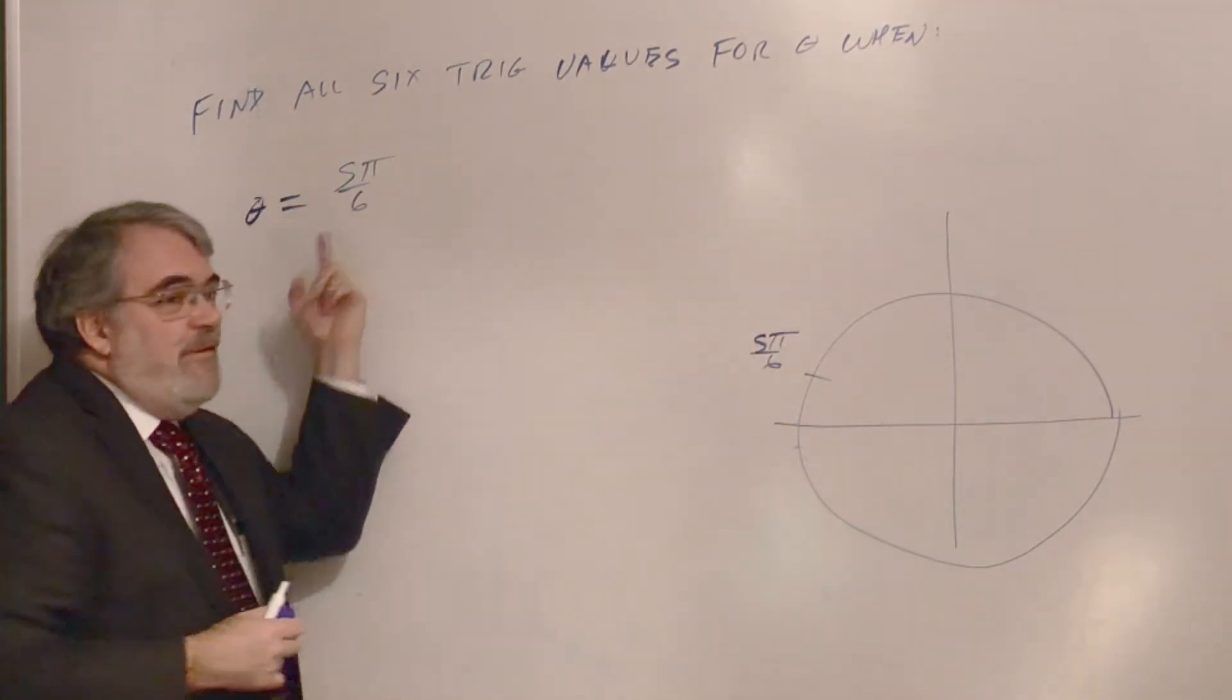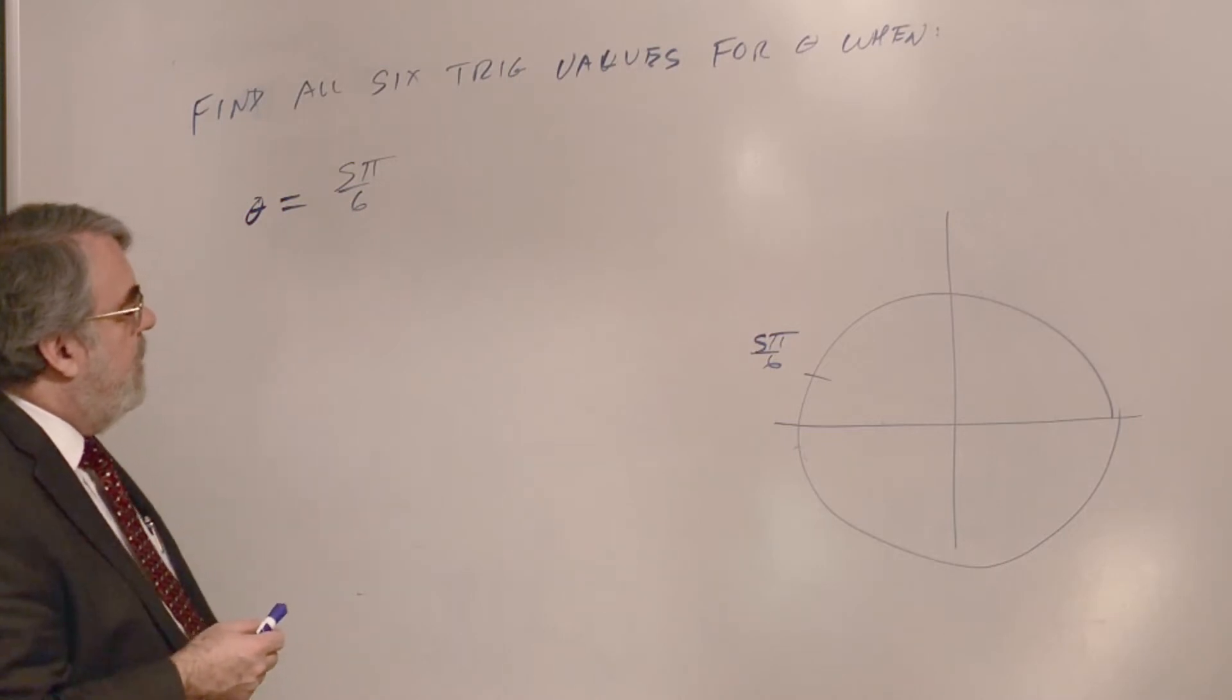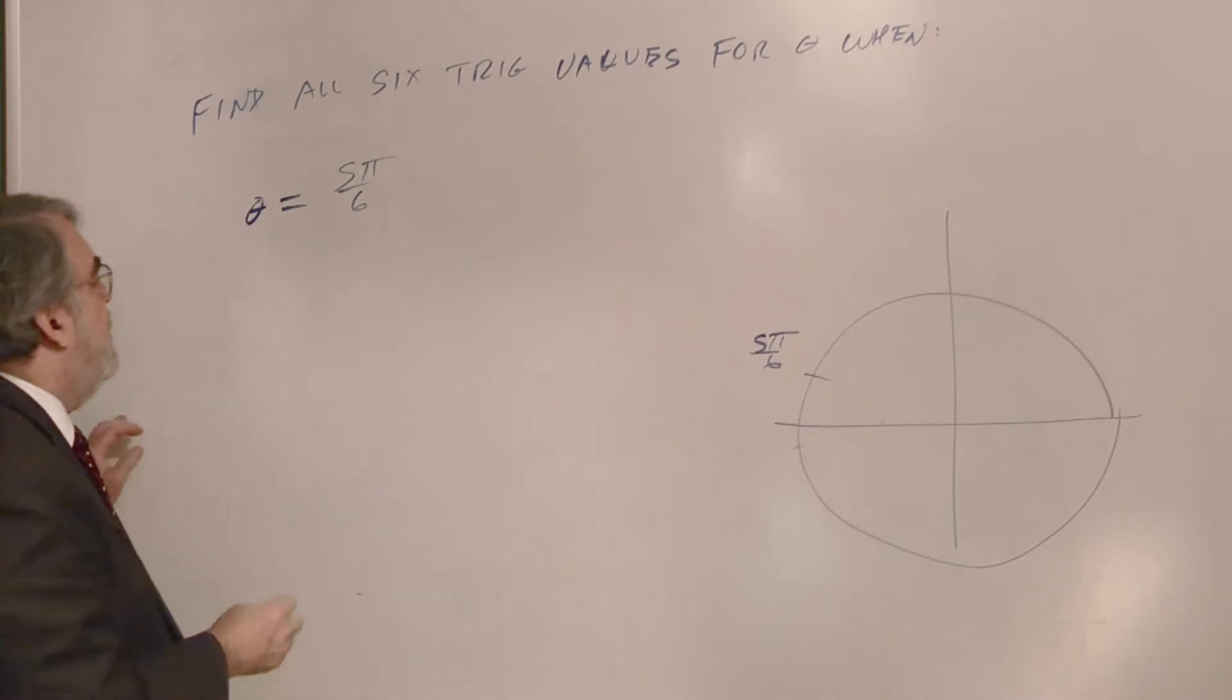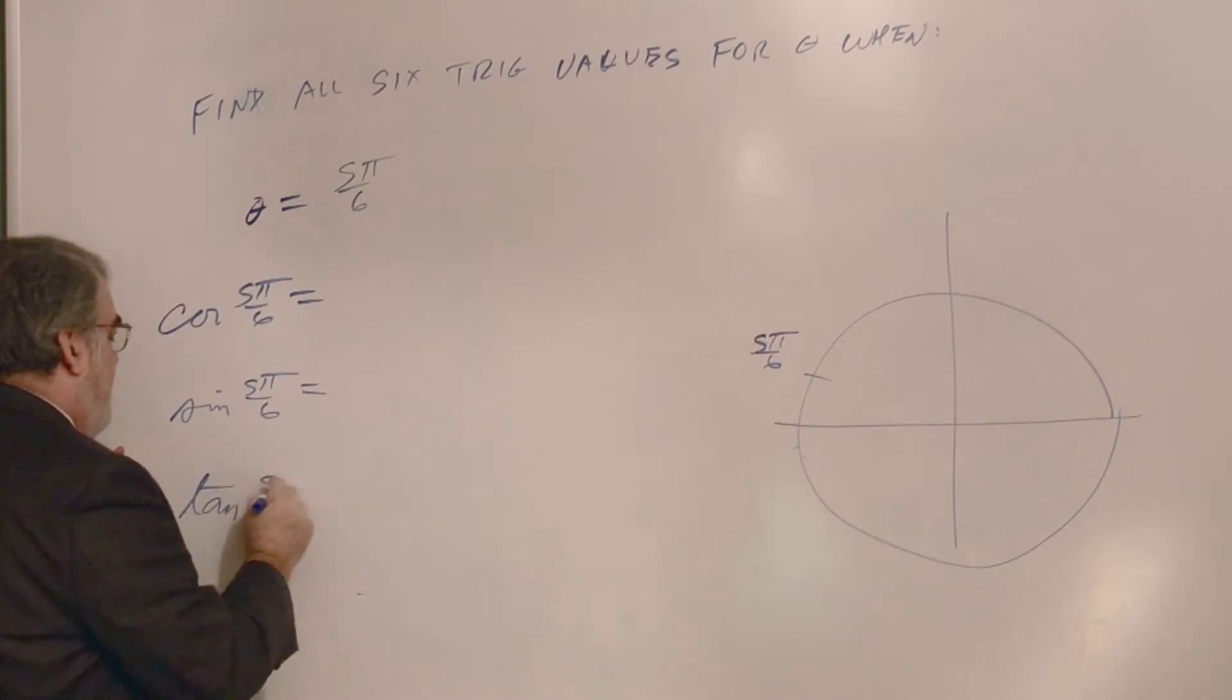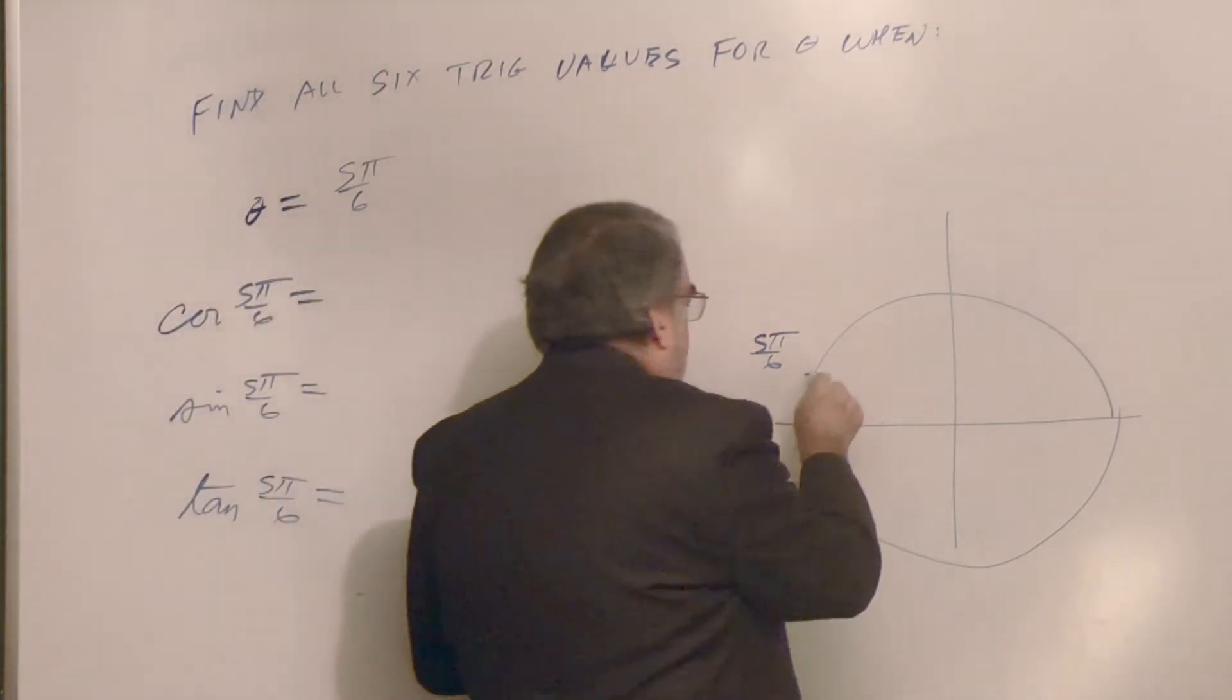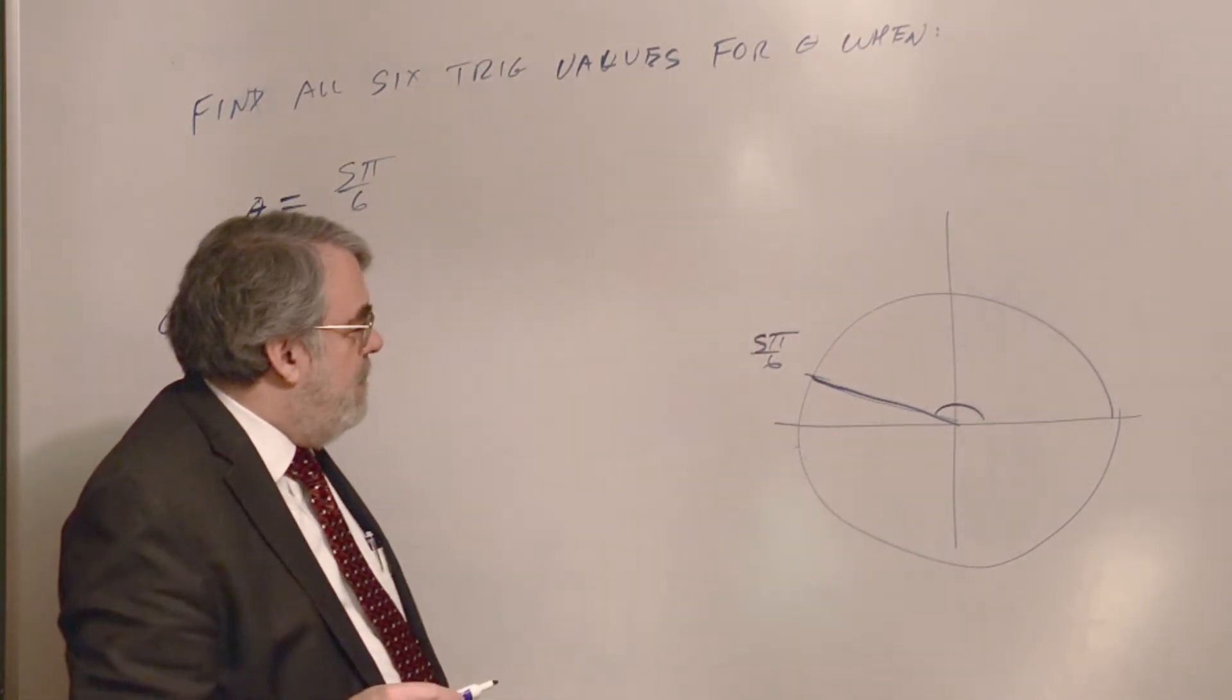I know you can also change this to degrees. 5 times 180 degrees divided by 6 will end up being 150 degrees. Alright, I'm just going to be stubborn and do it in radians because you have to get used to radians. So we want to know what the cosine of 5π over 6 is and the sine and the tangent.